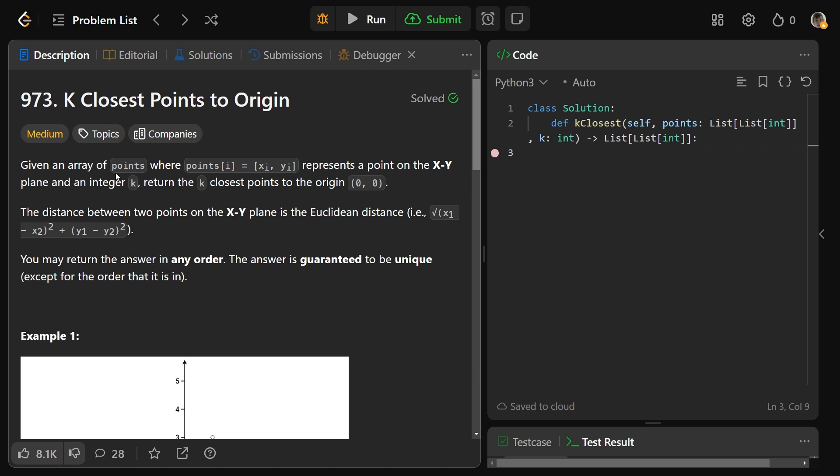We're given an array of points, where each point at i is simply xi, yi, and that's representing a point on the XY plane. We also have an integer k, where we want to return the k closest points to the origin, which is located at the middle at (0, 0). Whenever you say closest, we need to define what closest means, and in this case, the distance between two points on the XY plane is the Euclidean distance: the square root of (x1 - x2)² plus (y1 - y2)². We're able to return the answer in any order, and it's actually guaranteed to be unique, except for the order that it's in.